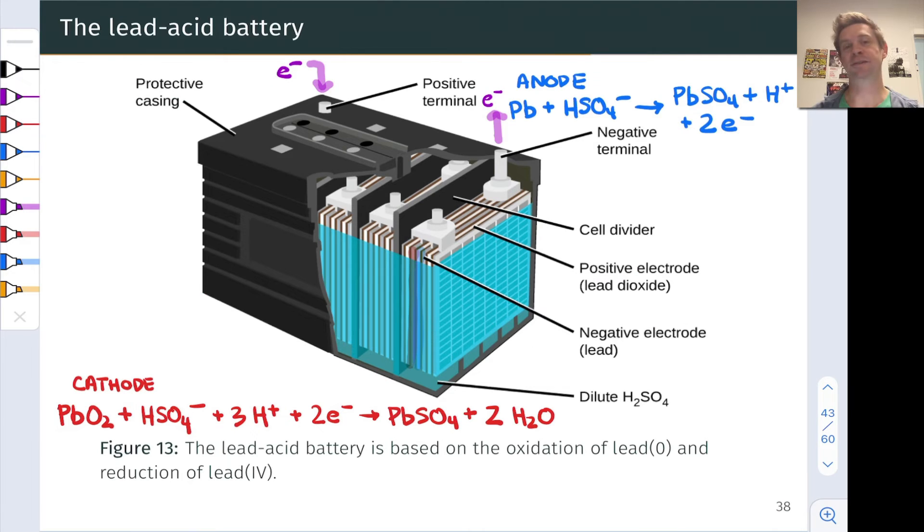The lead acid battery is the battery that we find in automobiles, and it's based on a combination of lead and sulfuric acid. At the positive terminal, lead four oxide is reduced to lead sulfate. Notice this is lead 4 going to lead 2, if we do the oxidation number map there. And so a reduction is occurring there. And at the anode, lead metal is undergoing oxidation to lead sulfate. Interesting that lead sulfate shows up as a product both at the anode and cathode here. And this is rechargeable.